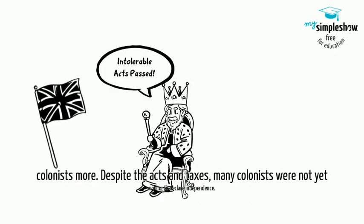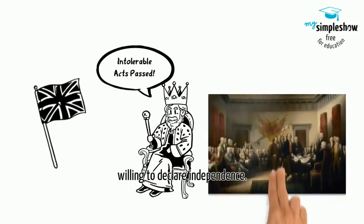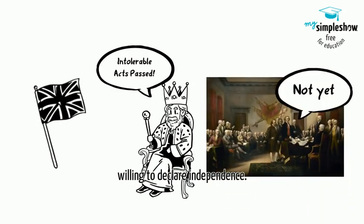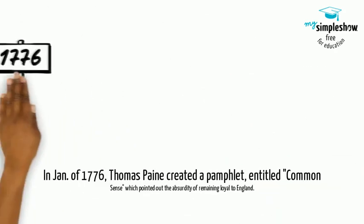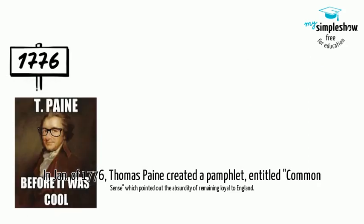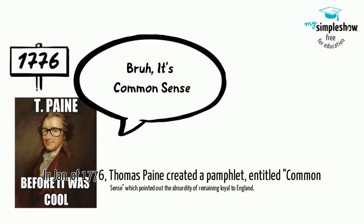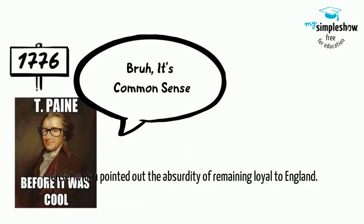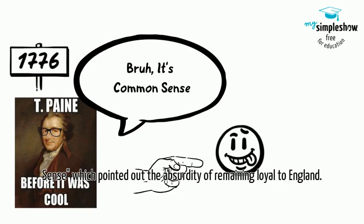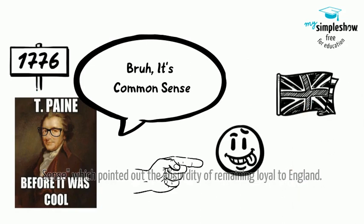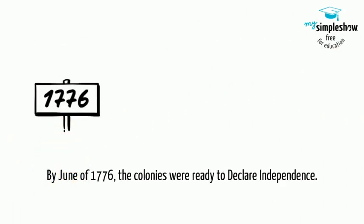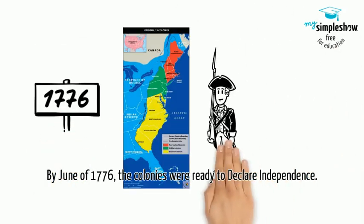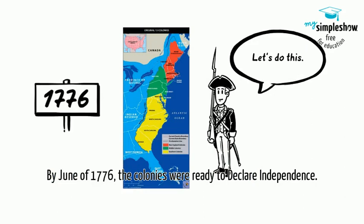Despite the acts and taxes, many colonists were not yet willing to declare independence. In January of 1776, Thomas Paine created a pamphlet entitled Common Sense, which pointed out the absurdity of remaining loyal to England. As a result, by June of 1776, the colonists were ready to declare independence.